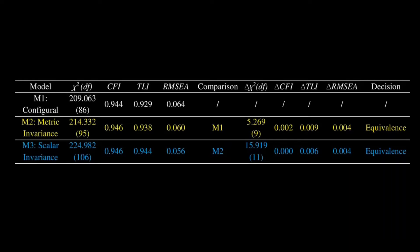Here are the values for the scalar invariance model fit indices. And to see whether the scalar invariance is met or not, we're going to compare these values to the model fit indices for the metric invariance model. This is basically what is shown in the comparison column, where it says M2. It just means that we're comparing these values to the values of model 2.